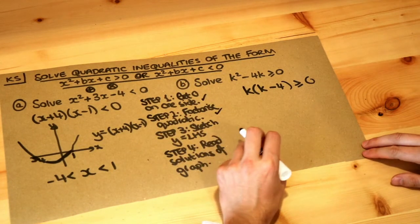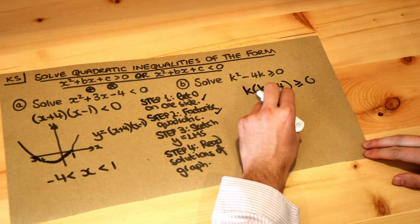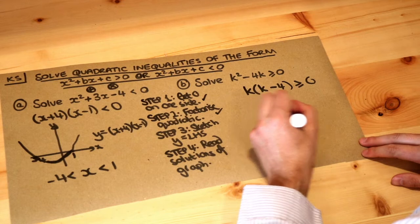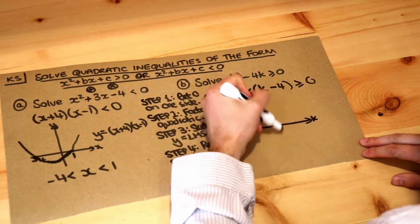Then we sketch y equals the left hand side. So we sketch y equals k times k minus four. Now I'm just going to imagine this as x rather than k because it doesn't really make a difference.